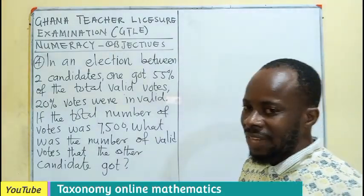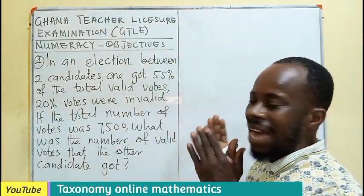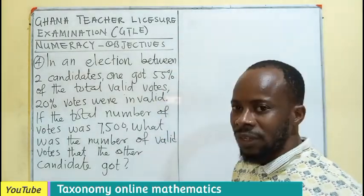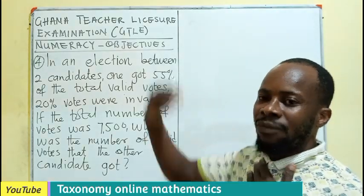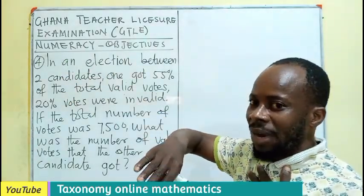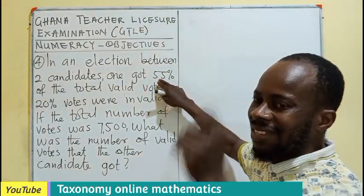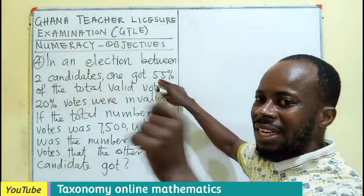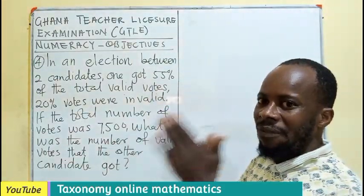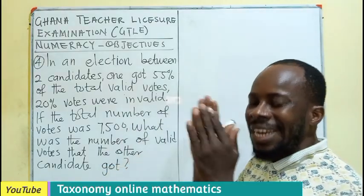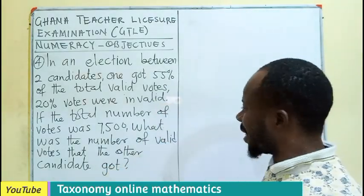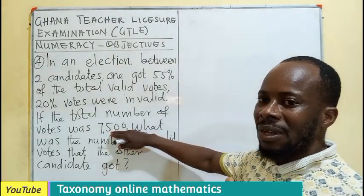If one person had 55% of the valid votes, that means the other valid vote percentage goes to the next person. What I mean is that 100 minus 55 gives us 45. So the first person had 55% and the second person had 45%.